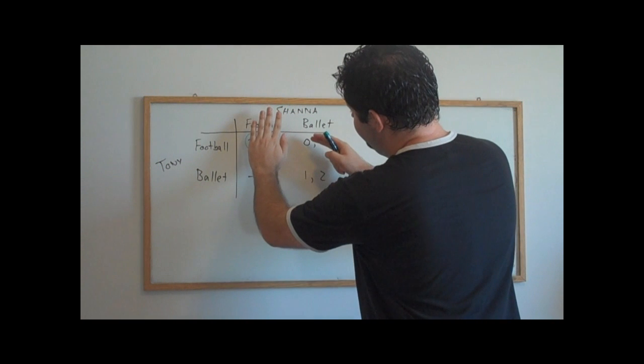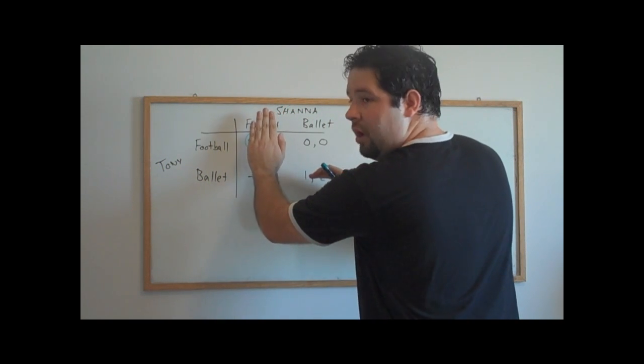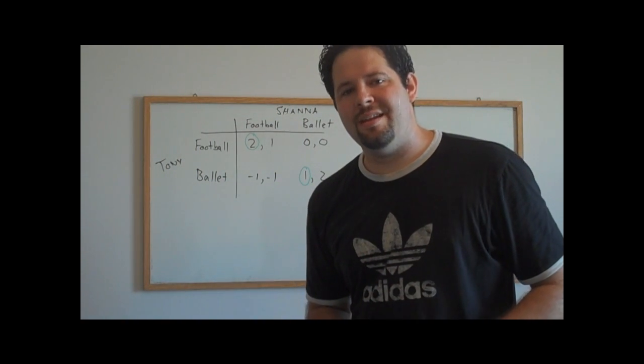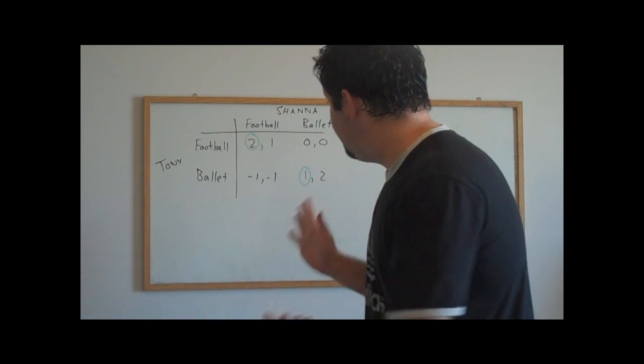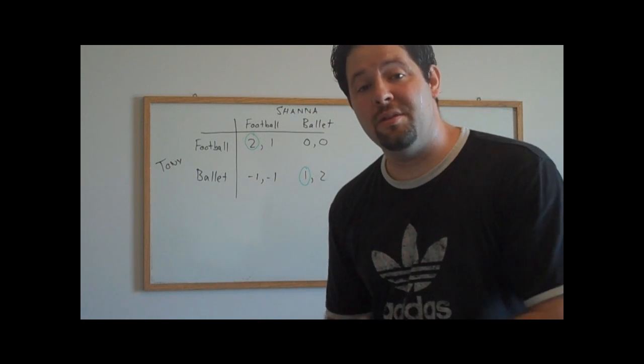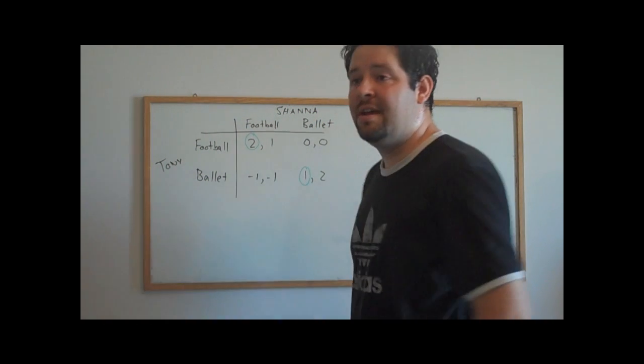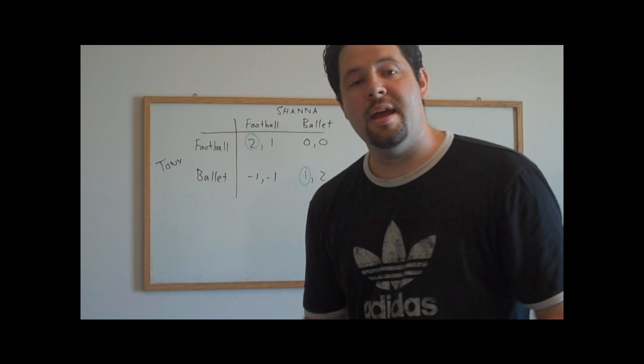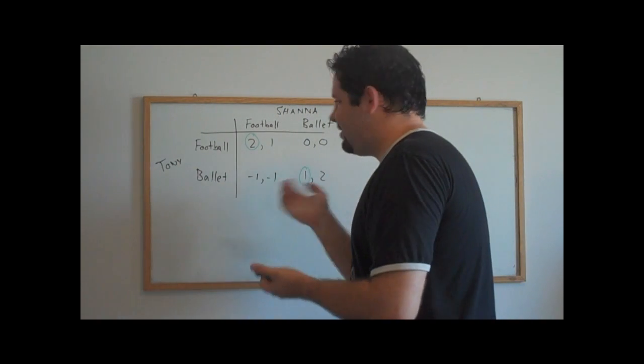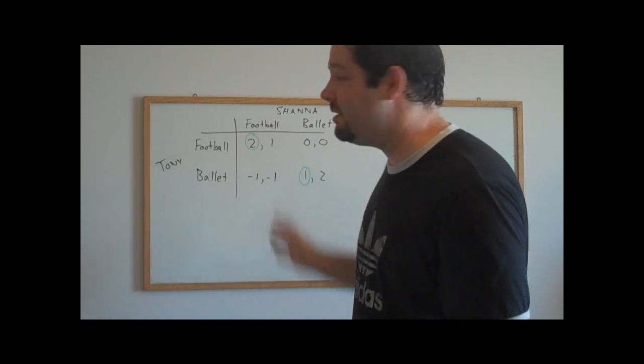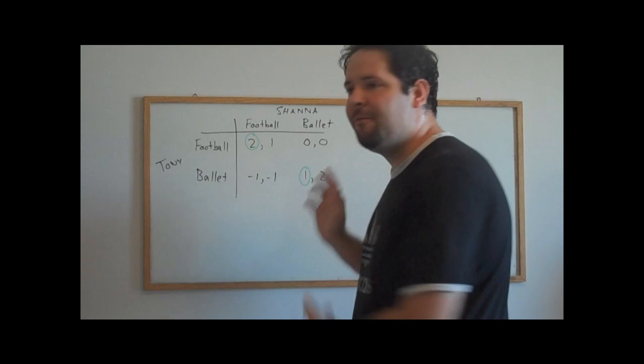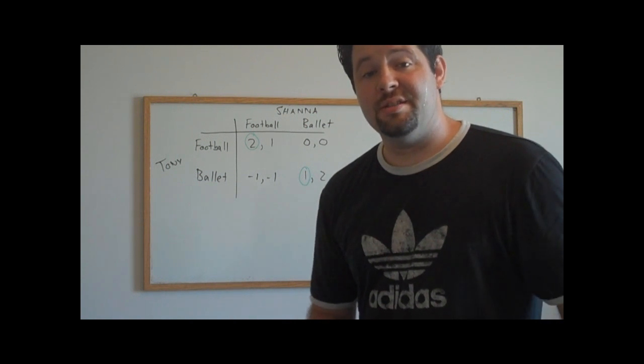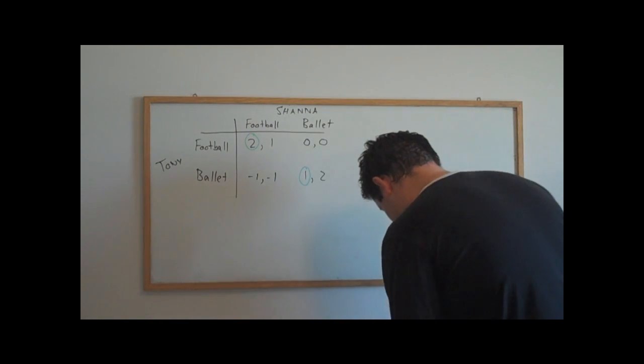If Shanna goes to the ballet, Tony is choosing between zero if he goes to football and one if he goes to the ballet. So, you'll see that this strategy that Tony employs is not quite the same as the one we had in the competition game example. In the competition game, the strategy didn't depend on what the other player's action was. In this one, it does. Now, in the competition game, when your strategy does not depend on what the other player does, that's what's called a dominant strategy. This is just a strategy that depends on what the other player does. This is not a dominant strategy, and we're going to get different features out of a game with strategies like this than games where we have dominant strategies like the competition game.